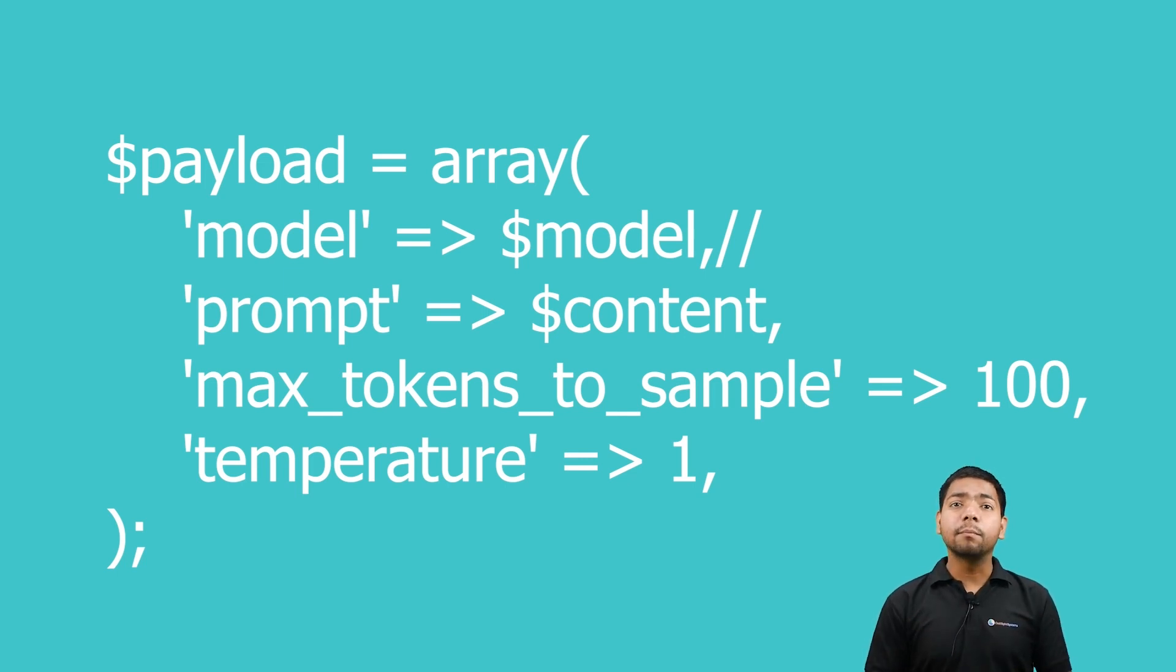The first one is model. This line sets the model key in the payload array to the value stored in the model variable. The model variable likely contains the name or identifier of the language model that you want to use for generating text.